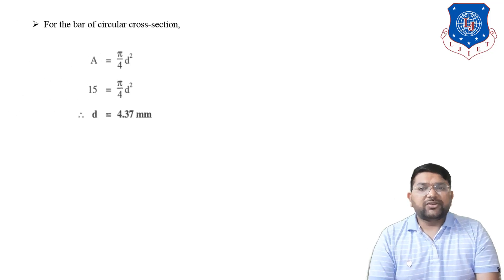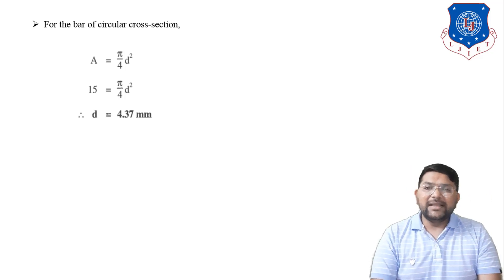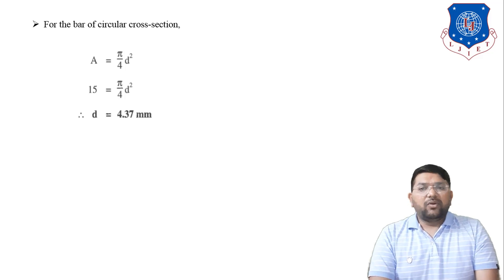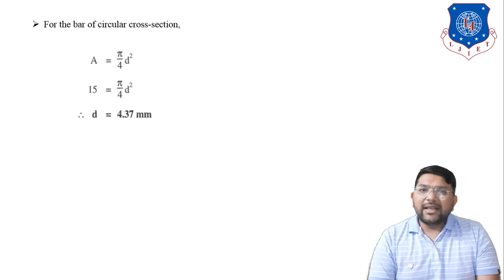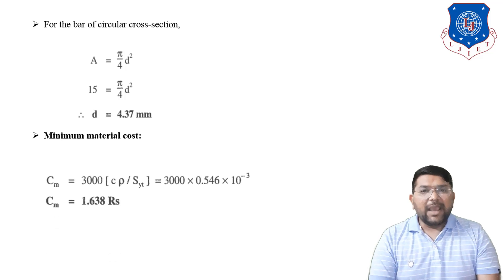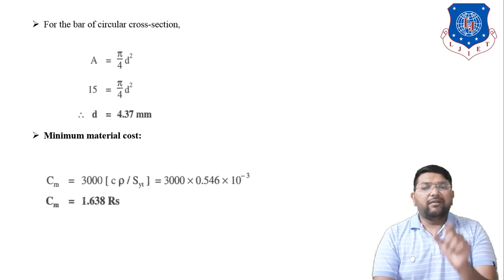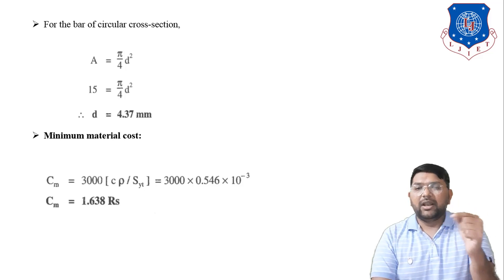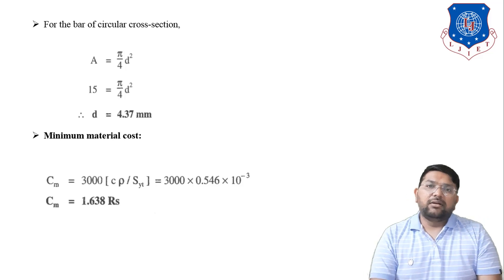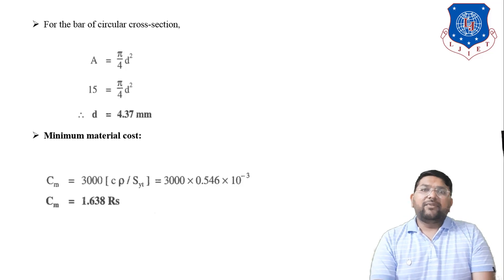For a circular cross-section, A = (π/4)·d². Setting 15 = (π/4)·d², the diameter d = 4.37 mm. The minimum material cost is Cm = 3000 × (c·ρ / S_yt) = 3000 × 0.546×10⁻³ = 1.638 rupees. Therefore, the selected material is plain carbon steel, the cross-sectional area is 15 mm², the diameter is 4.37 mm, and the minimum cost is 1.638 rupees.